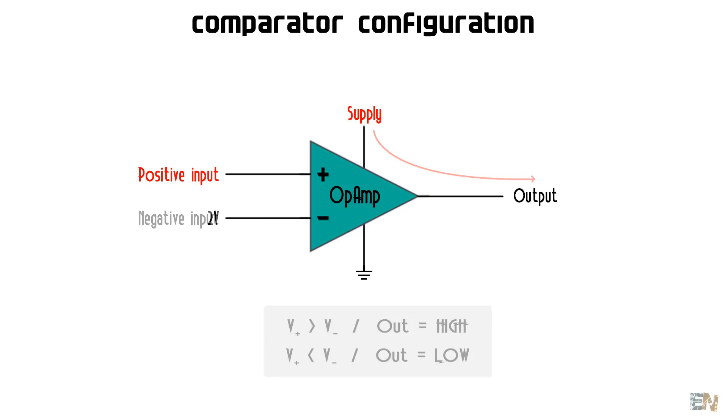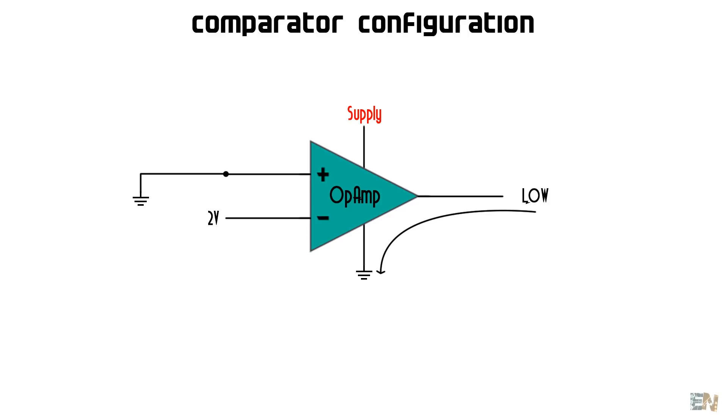So for example, if the negative input is connected to 2V and the positive to GROUND, we have a low output. I start increasing the voltage at the positive input from 0 and exactly when I reach a bit more than 2V the output is now high. That's why it's called a comparator, it compares which one is higher.